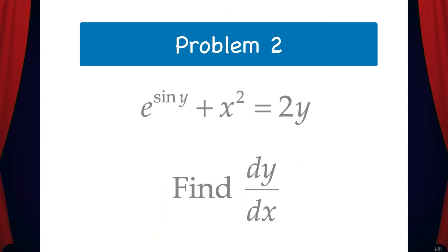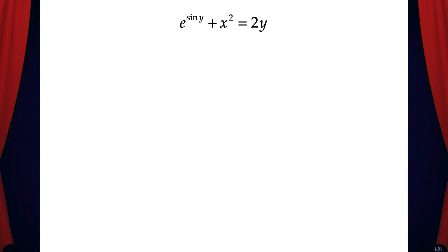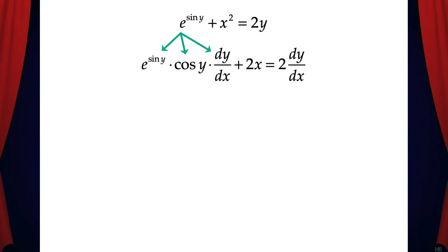Let's try another one. Find dy/dx for the equation e to the sine y plus x squared equals 2y. Let's take the derivative with respect to x of each term. e to the sine y becomes e to the sine y times cosine y times dy/dx by the chain rule. x squared becomes 2x, and 2y becomes 2 dy/dx.